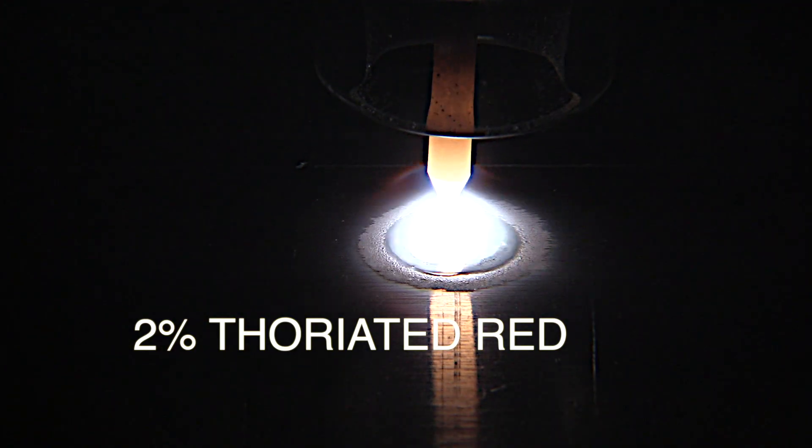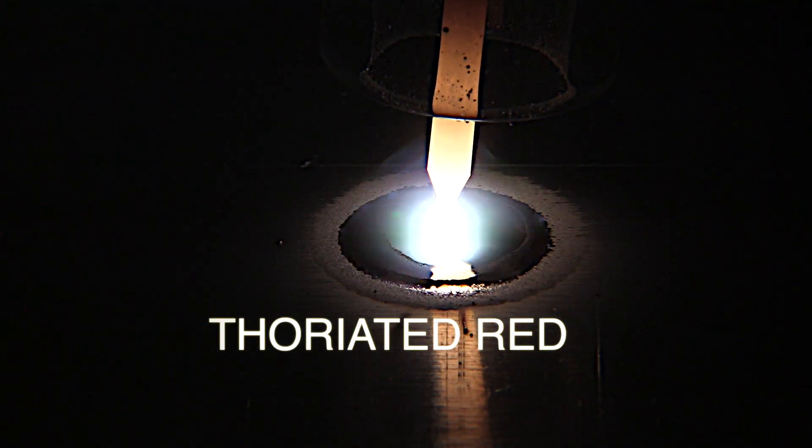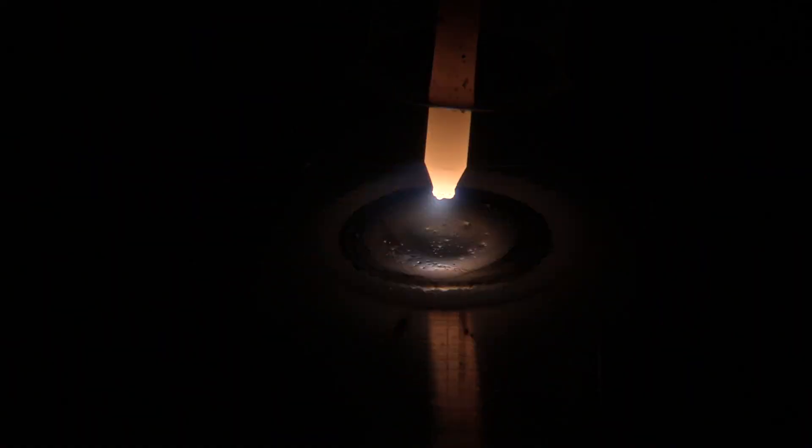First up is the thoriated which is red. I've welded a lot of aluminum with 2% thoriated but you do have to prep the tip correctly or you can get nodules on the tip.